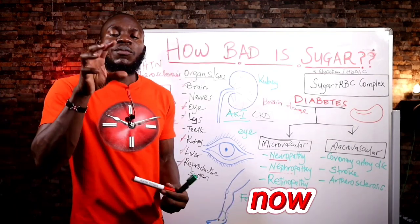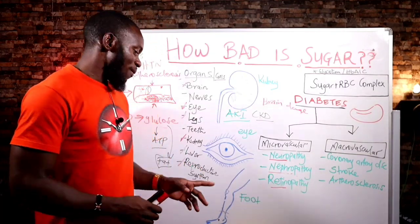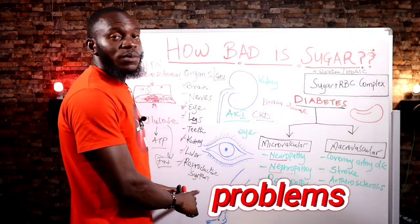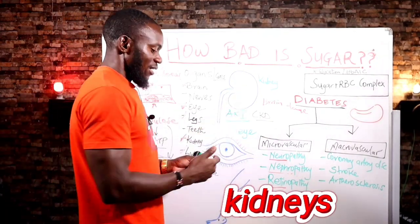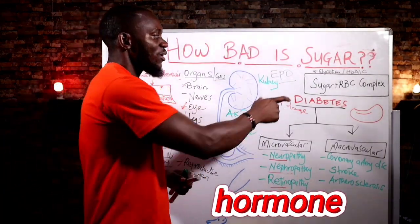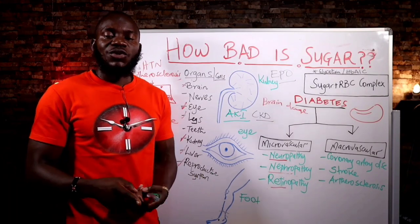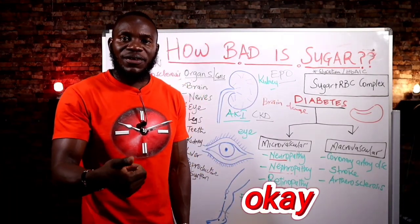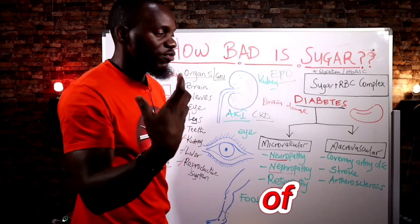Last but not least is the reproductive system. Most men are experiencing erectile dysfunction and premature ejaculation as a result of sugar intake. Sugar destroys the liver, so there is no proper production of testosterone, leading to erection problems. Also, sugar destroys the kidneys, and one kidney function is producing EPO — erythropoietin. Erythropoietin goes to the bone marrow and activates production of red blood cells. Erection is a result of blood flow to the penis. If you lack EPO you develop anemia, and with anemia there is no sufficient blood flow to the penis, so you will not have an erection.